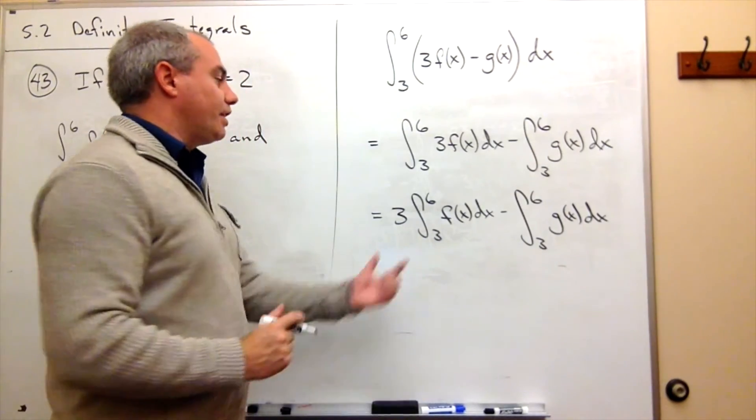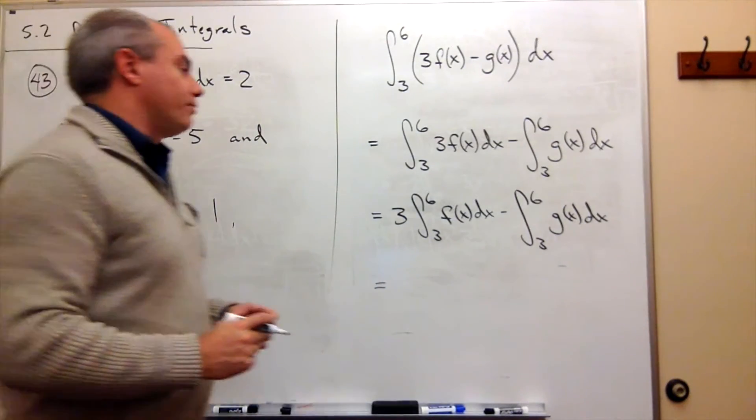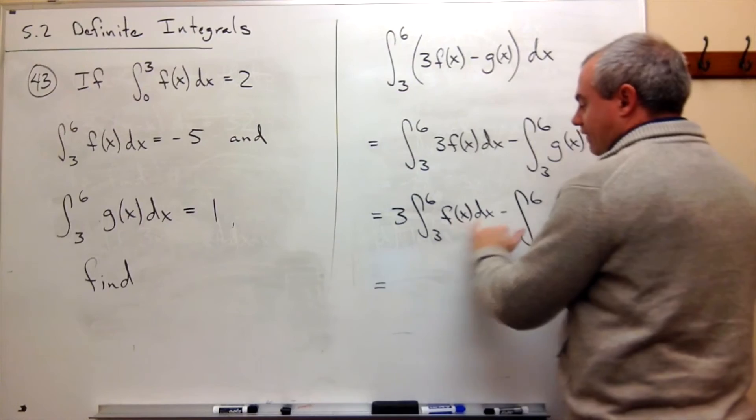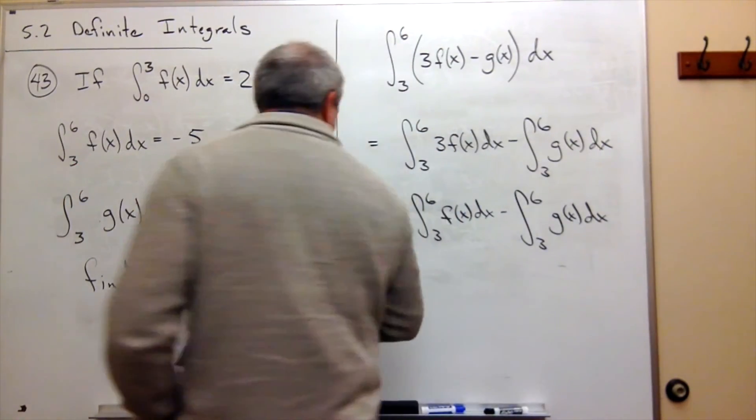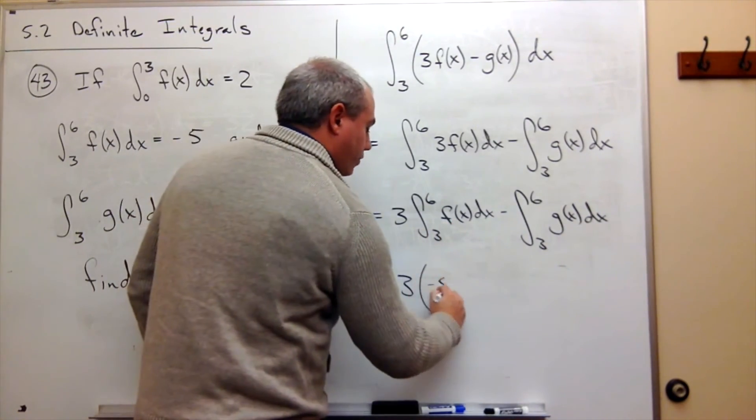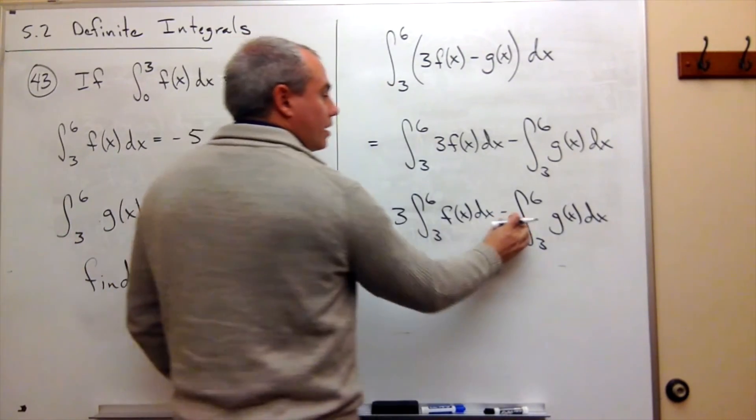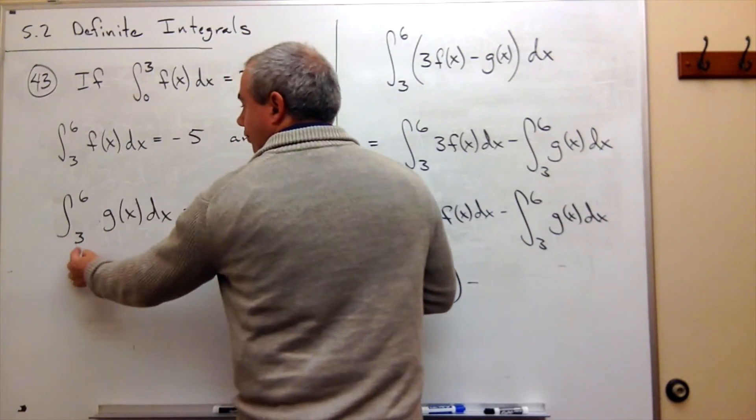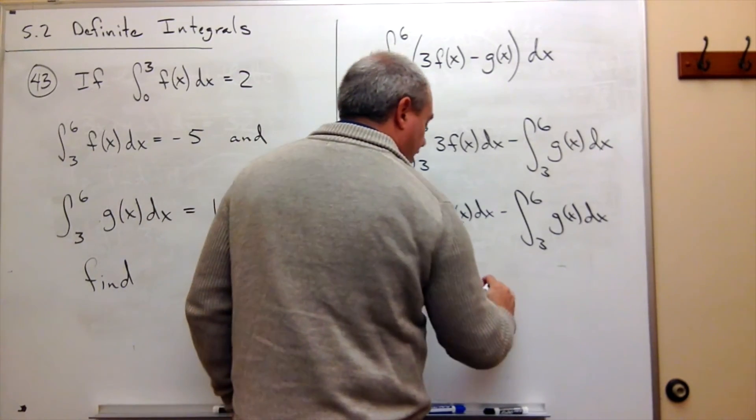Both of the definite integrals that are left over here are definite integrals that I am given in the problem. The first one is integral from 3 to 6 of f of x dx. I know that that is negative 5. So this is 3 times this definite integral, which I know is negative 5, minus this integral, the integral from 3 to 6 of g of x dx. The integral from 3 to 6 of g of x dx I know is 1. So this is minus 1.